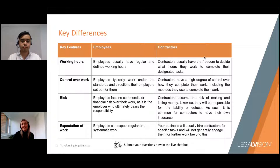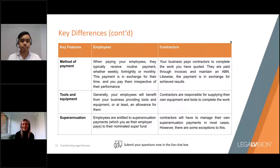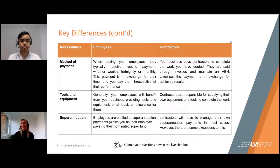Other factors include the method of payment, who supplies tools and equipment, and whether superannuation contributions are payable. Employees are generally paid on a regular pay cycle, don't supply their own equipment, and have super contributions paid into their nominated fund. By contrast, contractors usually invoice from their own ABN and generally supply their own tools and equipment. Contractors generally manage their own superannuation, however there are exceptions to this — it's a common misconception that contractors are always responsible for their super, so we recommend seeking advice from an accountant or tax lawyer on that point.